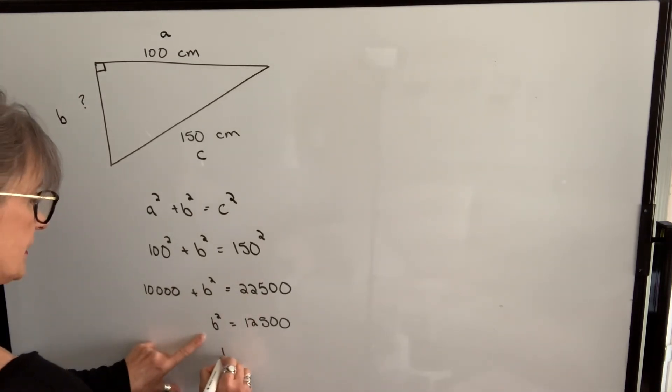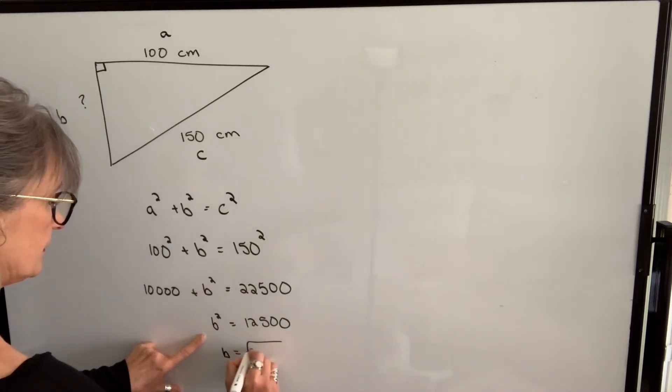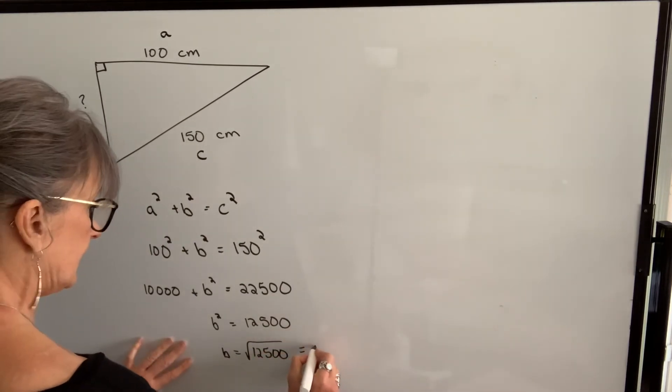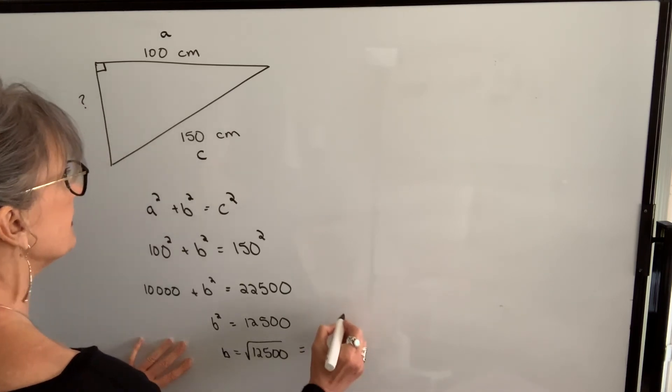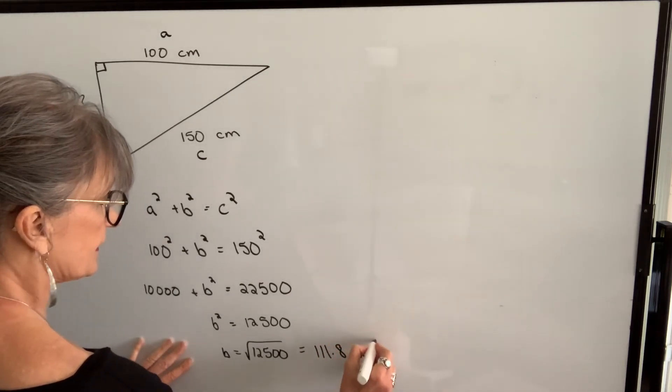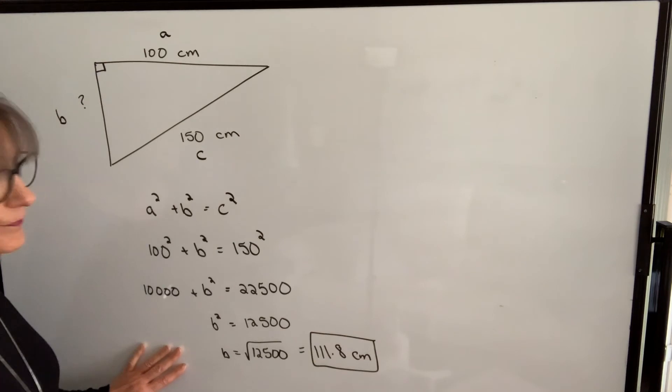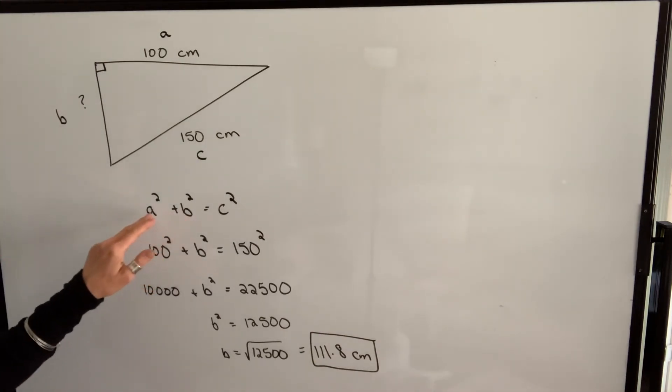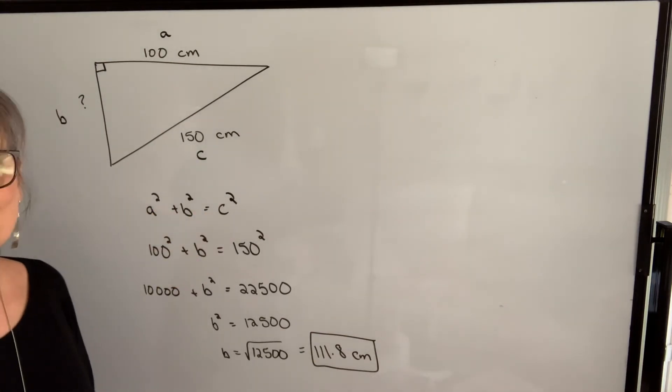Now to find b, I take the square root of both sides. And I get 111.8 unit is centimeters. So we can use our theorem to find either a, b, or c, as long as we know the other two values.